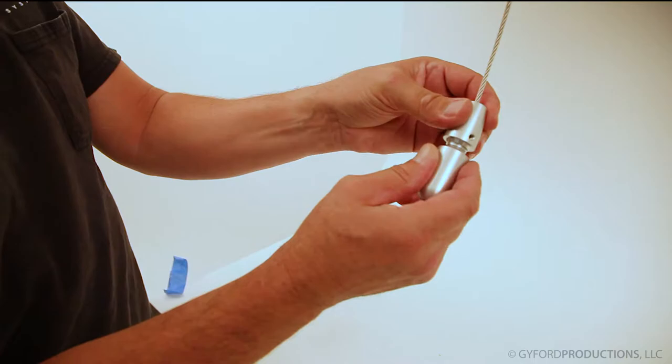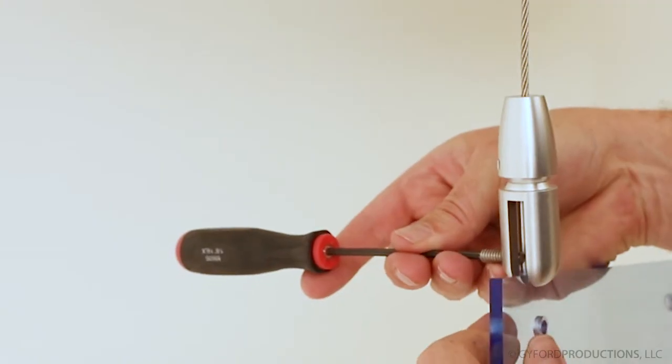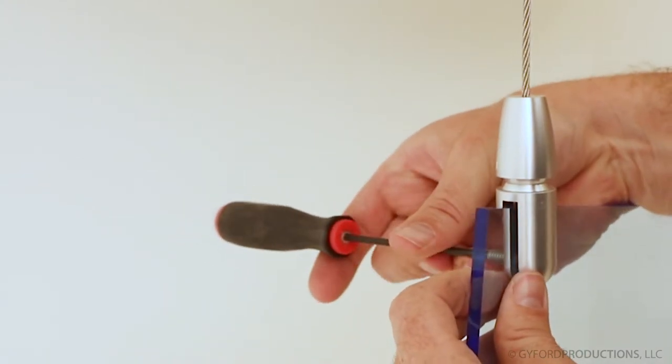You can level out your panel by turning the turnbuckle body up or down on the threaded mount. Level out the panel and tighten up all the set screws.